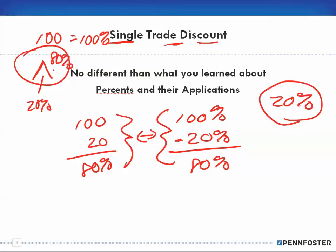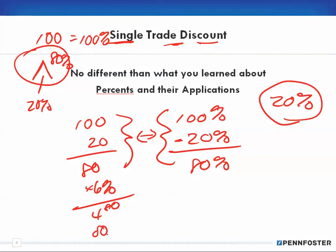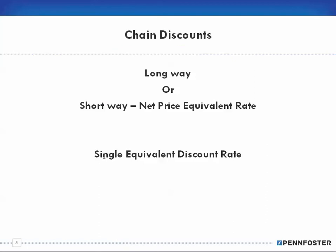With a single trade discount, there's only one discount amount. You can watch the percents and applications videos and do those homework problems — you already know this. It's just one discount, like seeing something 20% off or 10% off in a store. Your final amount after the discount is $80, plus 6% tax gives you $4.80, so you'd end up paying $84.80. Simple.